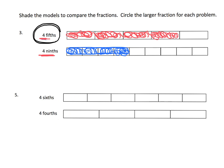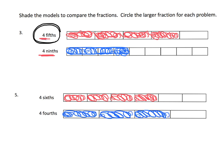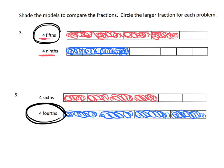Next we've got four-sixths and four-fourths. Shading in four-sixths — one, two, three, four — and then four-fourths — one, two, three, four. In both cases we shaded in four pieces, but here we shaded in four-sixths while down here we shaded in four-fourths, and we can clearly see that four-fourths is larger.